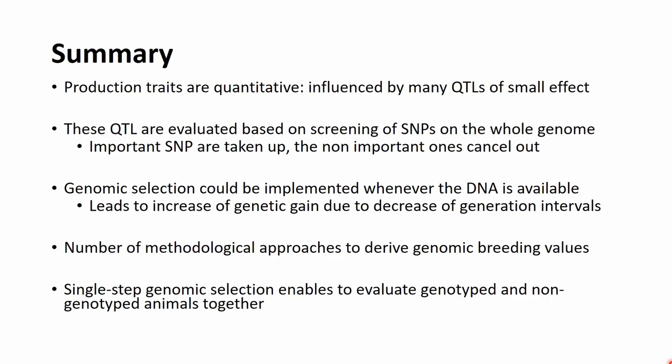Summarizing the presentation on genomic selection: we are after improvement of quantitative production traits, meaning traits influenced by many genes and QTLs of small effect. These QTLs are evaluated by screening SNPs throughout the whole genome — important SNPs are captured and non-important ones cancel each other out. Based on these SNP effects we obtain genomic breeding values (GEBVs), which can be derived and the whole system implemented whenever DNA is available, considering the necessary supporting factors.